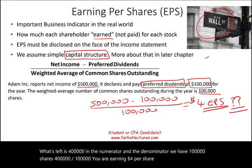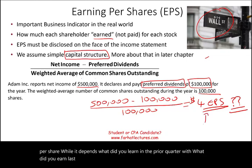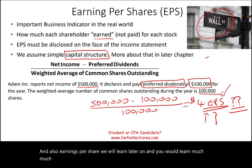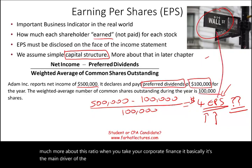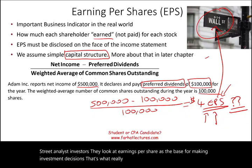Is $4 per share a good number? Well, it depends — what did you earn last quarter, last year, and what are your competitors earning? Obviously the higher the better. Earnings per share is the main driver of stock price, which is why Wall Street analysts and investors look at EPS as the basis for making investment decisions.